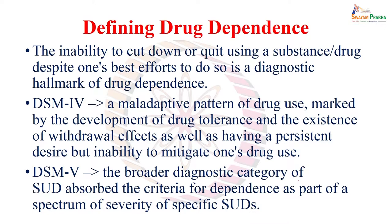DSM-5 has changed this — there is no separate definition of drug dependence in DSM-5. Instead, they have defined substance use disorder and under that have absorbed the criteria of dependence as part of a spectrum of severity of specific substance use disorder. Drug dependence is therefore an inbuilt, ingrained part of substance use disorder, so all people suffering from drug dependence are actually suffering from substance use disorder.